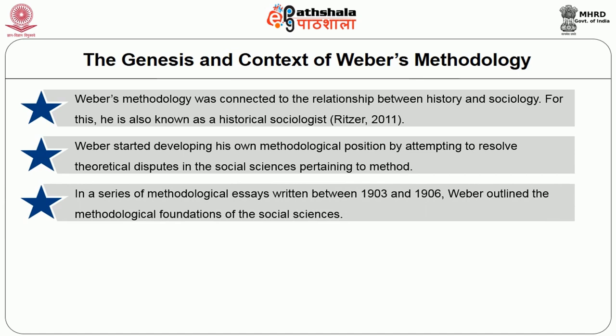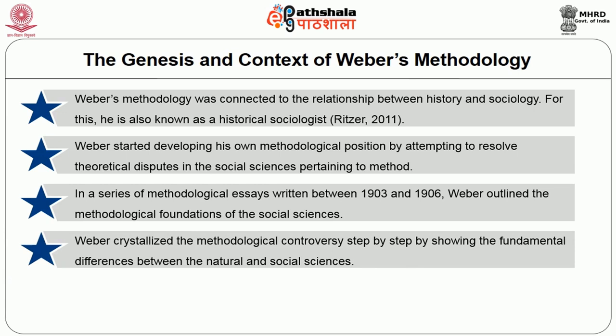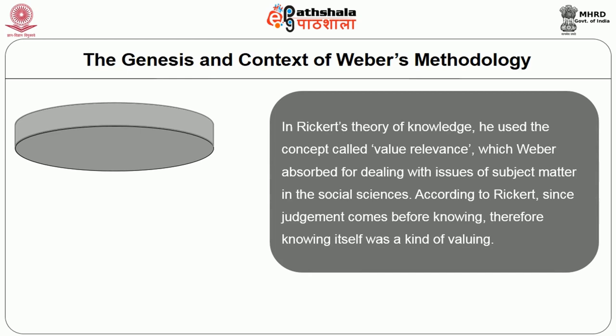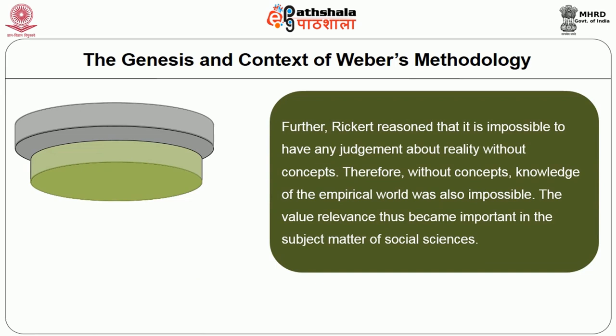Weber started developing his own methodological position by attempting to resolve theoretical disputes in social science. In a series of methodological essays written between 1903 and 1906, Weber outlined the methodological foundations of the social sciences, crystallizing the fundamental differences between natural and social sciences. For Weber, social science must arrive at a methodology which encompasses both general and individual aspects of historical reality — a procedure he referred to as the ideal type. In Rickert's theory of knowledge, he used the concept of value relevance, which Weber absorbed for dealing with issues of subject matter in the social sciences. Rickert reasoned that it is impossible to have any judgment about reality without concepts; therefore, without concepts, knowledge of the empirical world was also impossible.